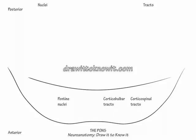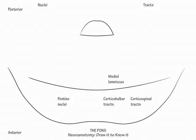Corticopontine fibers synapse on the pontine nuclei and project to the contralateral cerebellum to help in motor planning. Now move to the pontine tegmentum. Show the medial lemniscus in the medial ventral tegmentum. Unlike in the midbrain where the red nuclei push the medial lemniscus out laterally, in the pons and below, the medial lemniscus lies medially.